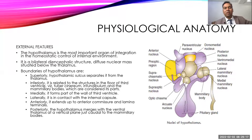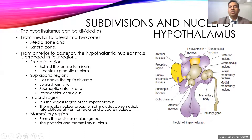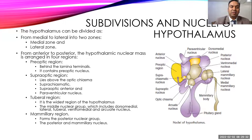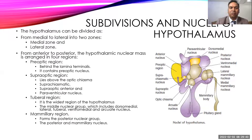The hypothalamus is a group of nuclei that can be divided into different zones for ease of understanding. From medial to lateral, it is divided into two zones: medial and lateral zones. From anterior to posterior, it is divided into four zones: pre-optic, supra-optic, tubular, and mammary zones.